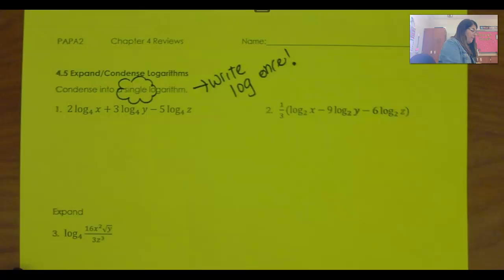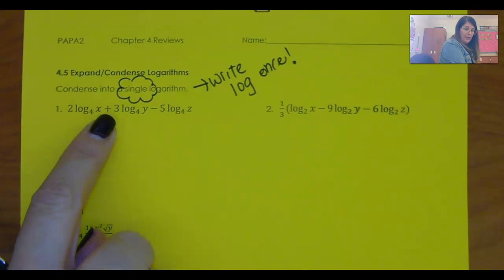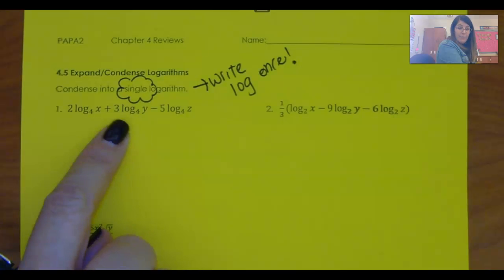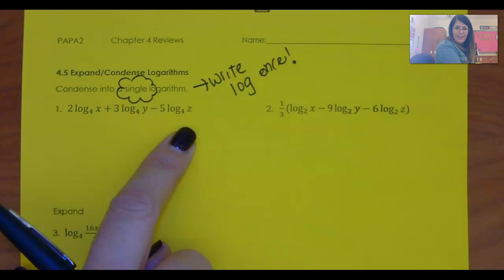Okay, so let's go over a couple of the rules. A coefficient becomes an exponent. Adding means they multiply. Subtracting means you divide. You just put it in the denominator.